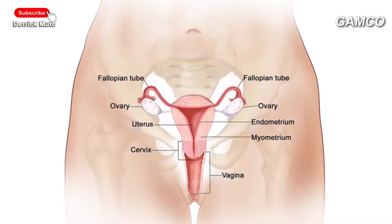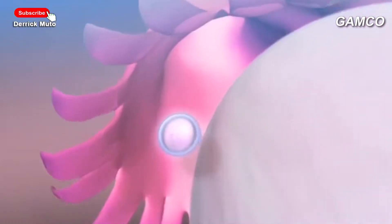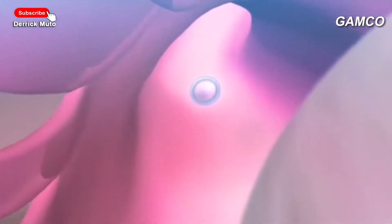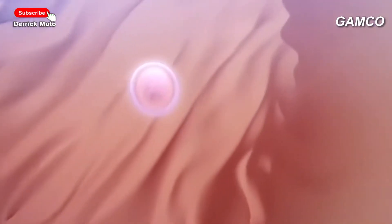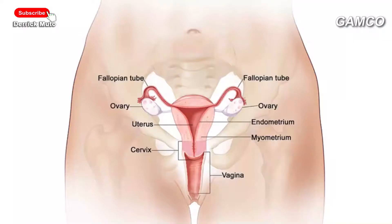Number four: the fallopian tube or oviduct. It has a funnel-shaped open ending. The opening has finger-like projections called fimbriae. It is about 10 to 14 centimeters long. It has a muscular wall and is lined by a mucous-secreting layer of ciliated epithelium. Its function is to provide space for fertilization.